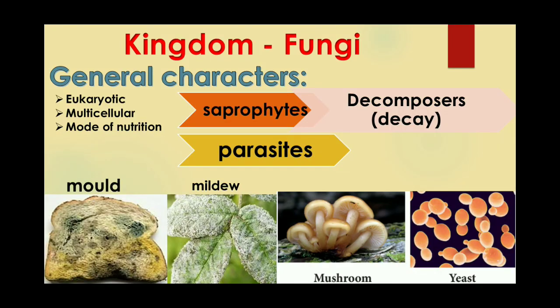Kingdom Fungi: fungi are eukaryotic and mostly multicellular. They secrete enzymes to digest food and then absorb it. The mode of nutrition of fungi is saprophytic — they obtain food from dead and decaying organic matter and are decomposers — and some are parasites. Examples: mold, mildew, mushrooms, and yeast.